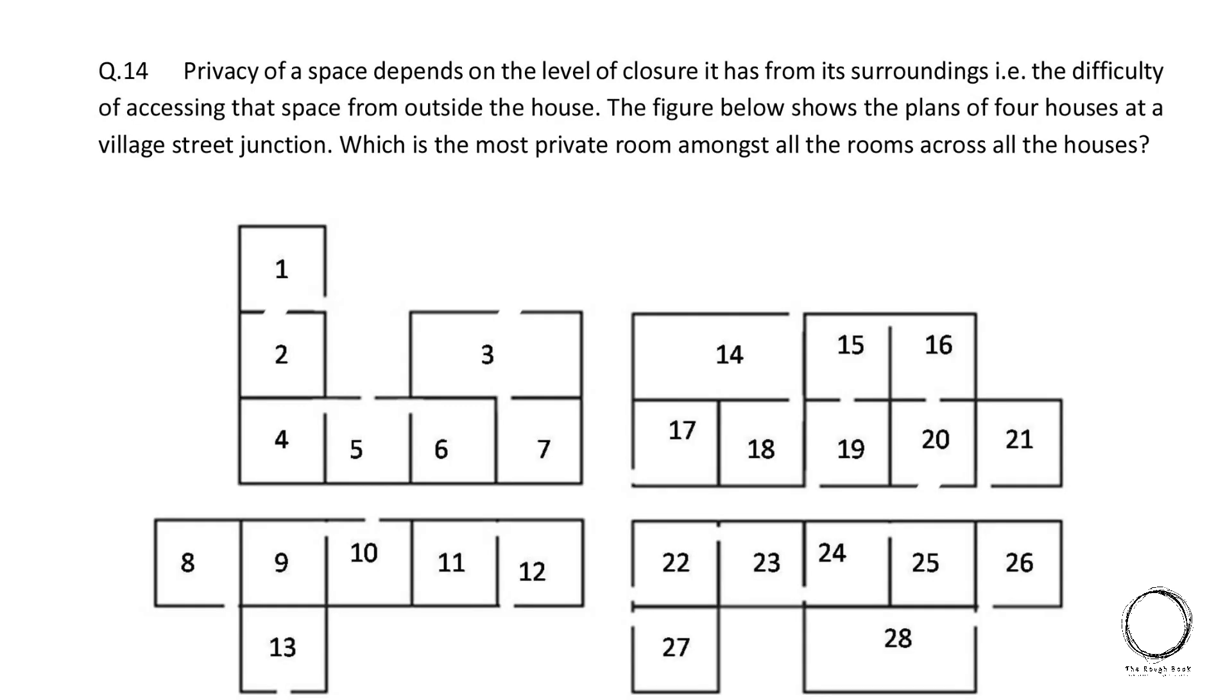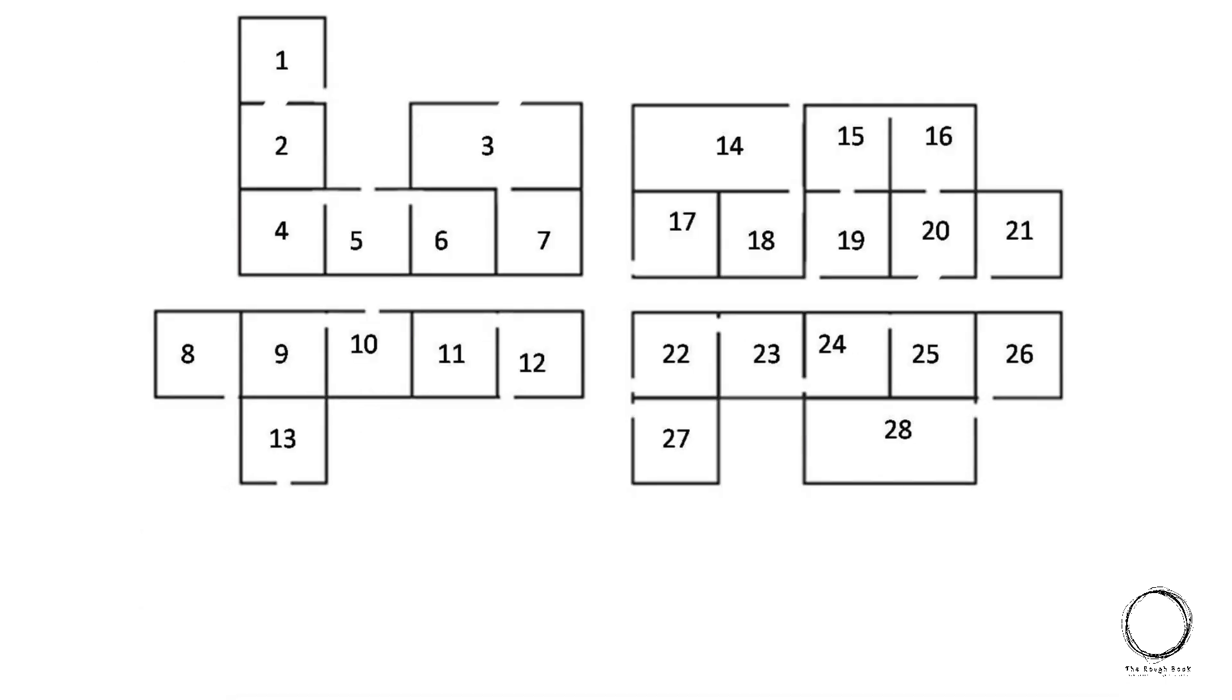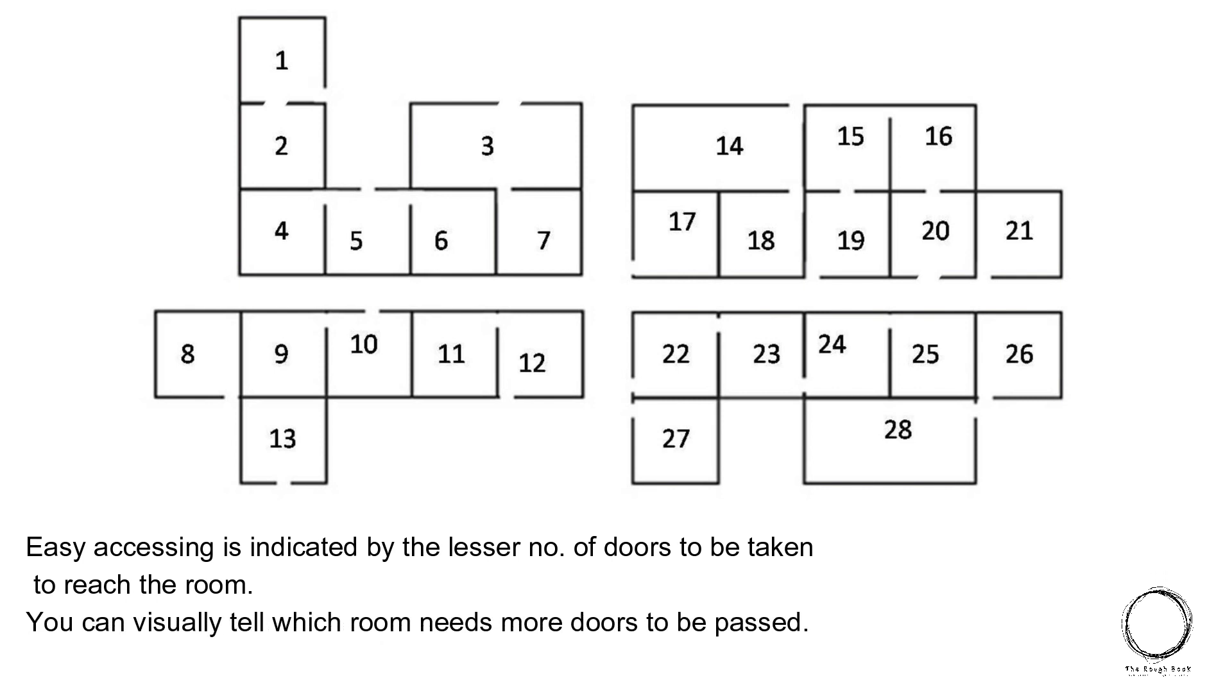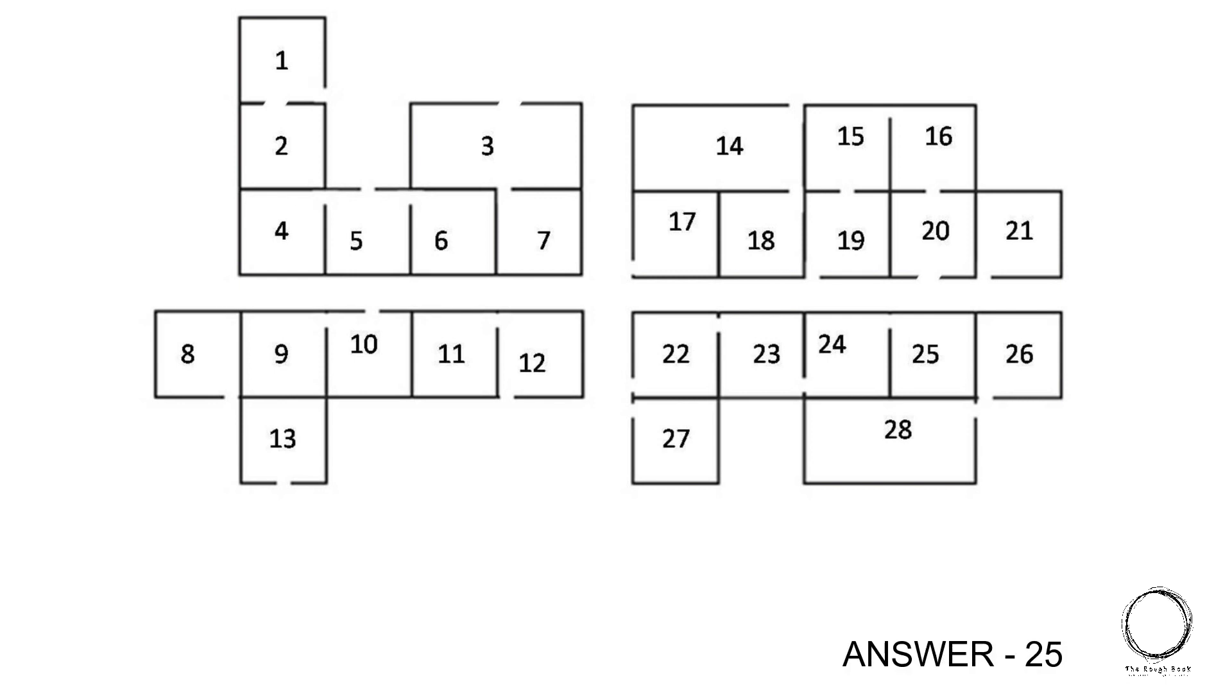Next, privacy of a space depends on the level of closure it has from its surroundings, that is the difficulty of accessing that space from outside the house. The figure below shows the plan of 4 houses at a village street junction. Which is the most private room amongst all the rooms across the houses? So this is the plan and you need to find one such room which has least openings and which have openings only from the inner rooms. So observing that, the right answer is 25 which is open only through an inner room that is 24 and is highly segregated from the outer surrounding.